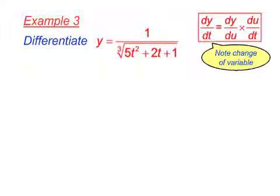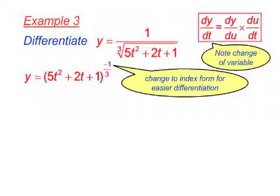Let's look at a more complicated function here. We have y equals 1 over the cube root of (5t squared plus 2t plus 1). Notice first that we've changed the variable here. Instead of dy/dx, we've got dy/dt. It doesn't matter, we can still use the same process. First, always change cube roots, square roots, and so on, into index form to make the differentiation easier.